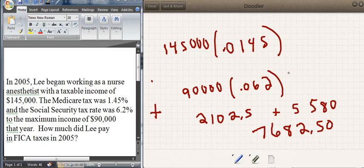And there's the rest of it. If you multiply those values out, that's what you're going to get. So the tax for 2005 was $7,682.50. Let's try another problem.